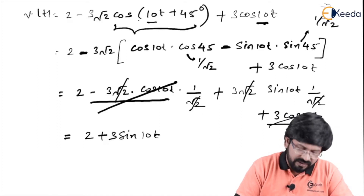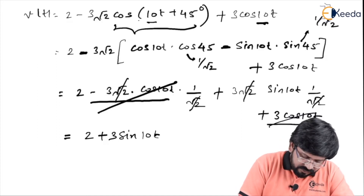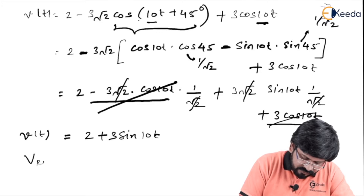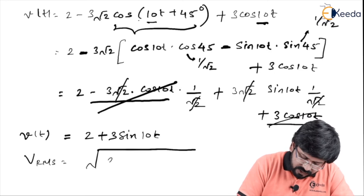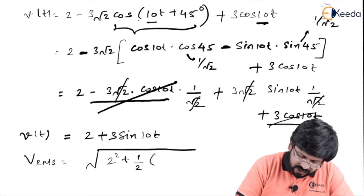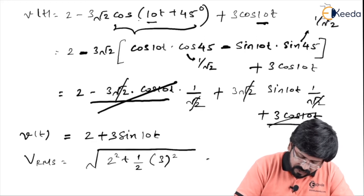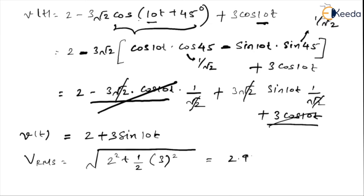So this is the final simplified series. Now I can go for V_RMS which is straightaway equal to under root of DC part squared, which is 2 squared, plus half times 3 squared. After solving this you will get 2.9 volt. So V_RMS is 2.9 volt.